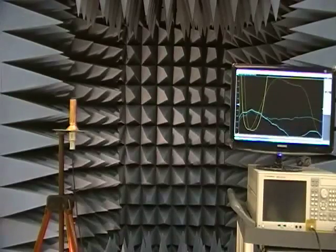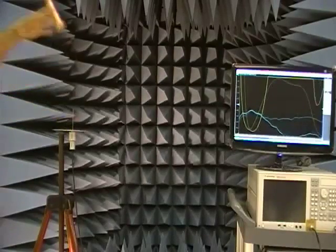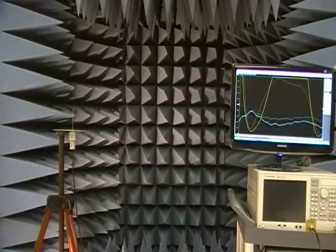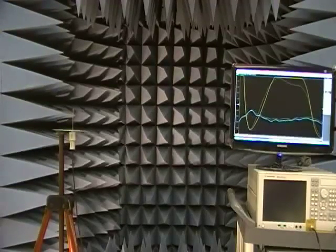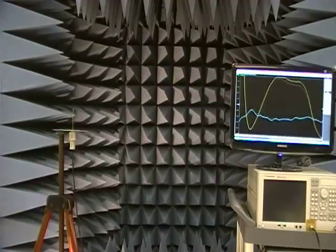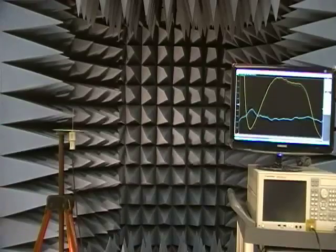Notice that we have a long time constant on the network analyzer to make it easier to see the changes. The bandwidth looks a bit better than the monopole alone, but not by much when you put on the copper sleeve.